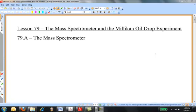Hello again, and welcome to Advanced Physics for High School Students. This is Lesson 79, and it is entitled The Mass Spectrometer and the Millikan Oil Drop Experiment. These two topics are not related to each other, so we'll take them one at a time.